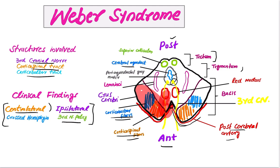On the contralateral side, two fiber tracts are involved: corticospinal tracts and corticobulbar tracts. Due to destruction of corticobulbar fibers, there will be paralysis of the lower part of the face and tongue on the contralateral side.